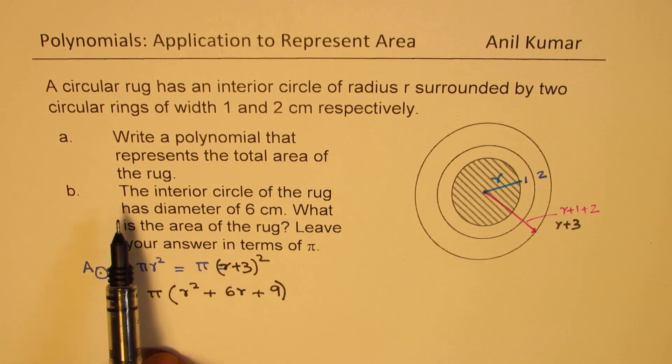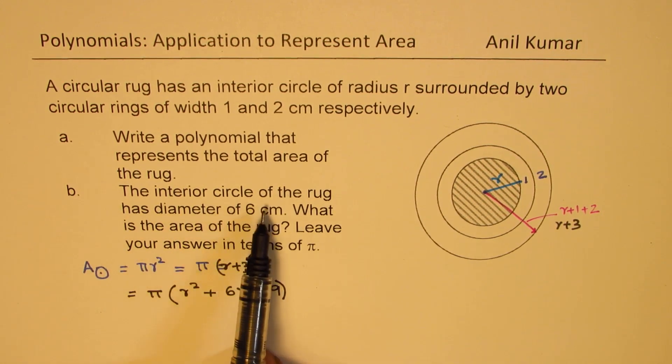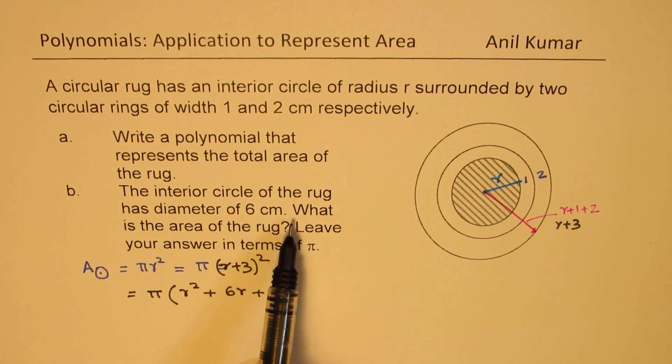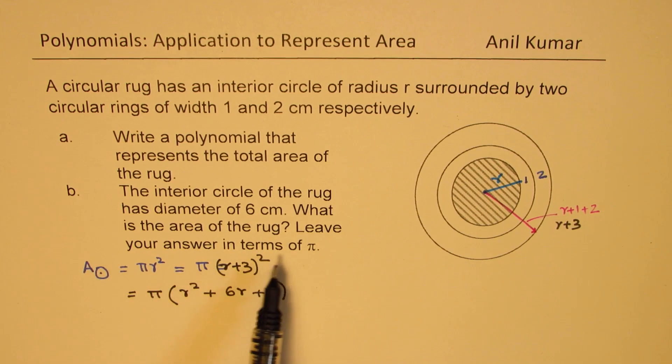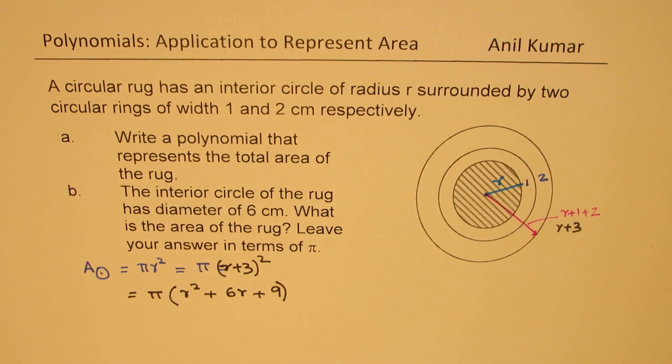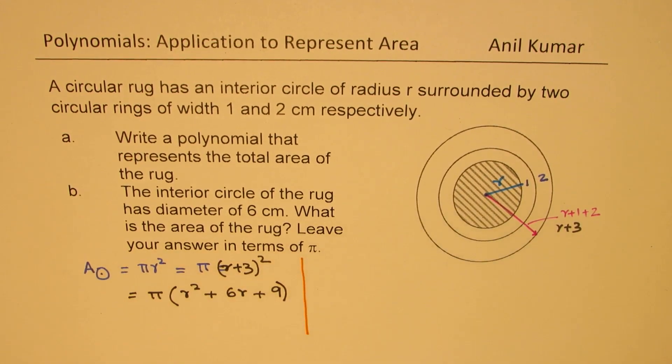Now part b is: the interior circle of the rug has a diameter of 6 cm. What is the area of the rug? Leave your answer in terms of π. So for part b, we are given the diameter.